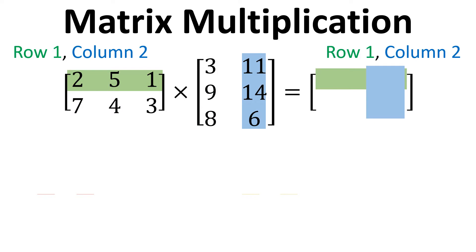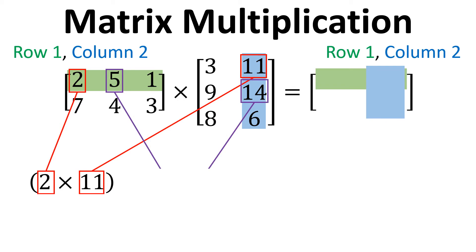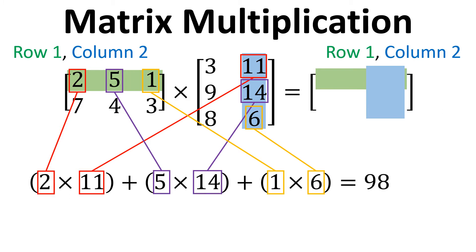Now we're going to move on to row 1, column 2. So again we're focused on the first row in matrix 1 and column 2 in matrix 2. And that's going to be used to work out the value of the element here. So again it's the same process. We multiply the entries together. So it's 2 times 11 and then it's 5 times 14 and then it's 1 times 6. If we add all of those up we get 98. So that's what's going to go into our element for row 1, column 2 in the answer matrix.